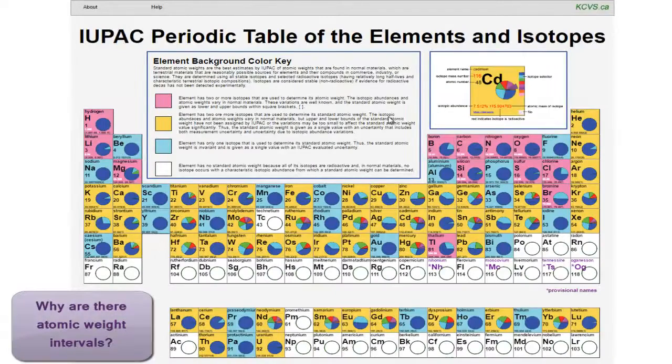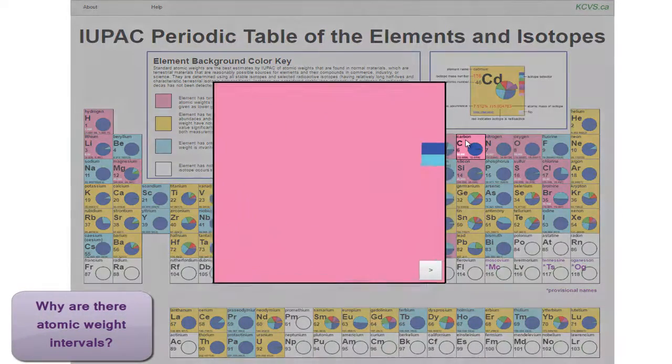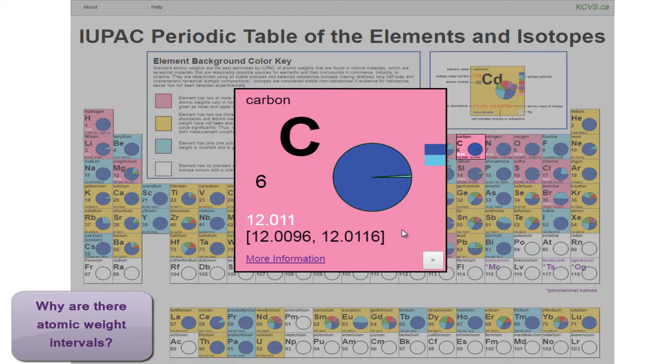Why are there atomic weight intervals? Atomic weight is calculated from the relative abundance and atomic mass of each stable and long-lived radioactive isotope of an element.